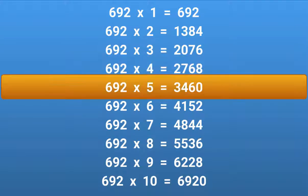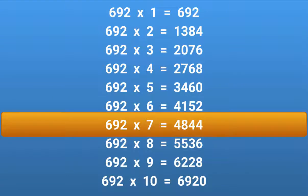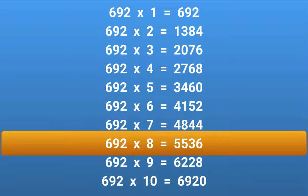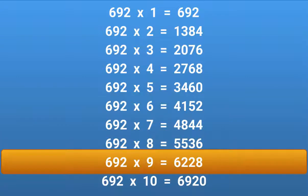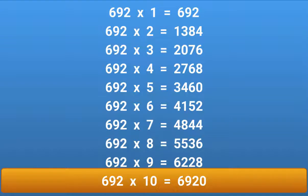692 × 5 = 3460. 692 × 6 = 4152. 692 × 7 = 4844. 692 × 8 = 5536. 692 × 9 = 6228. 692 × 10 = 6920.